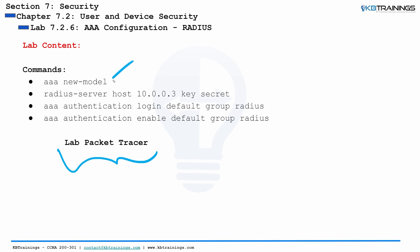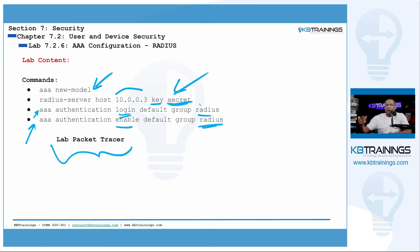We're going to use 'aaa new-model' to enable AAA in Cisco devices, and this command to identify the RADIUS server — you can see we have the IP address and the secret password. The third command will use AAA for authentication at login and point to the RADIUS server. The last command does the same thing for the enable password, also pointing to the RADIUS server.